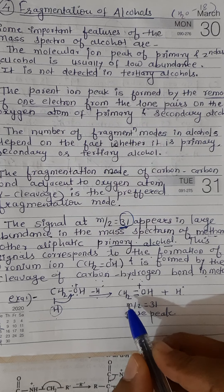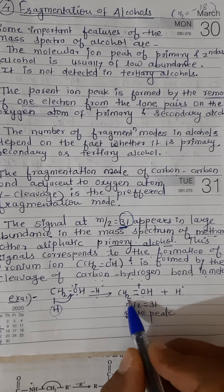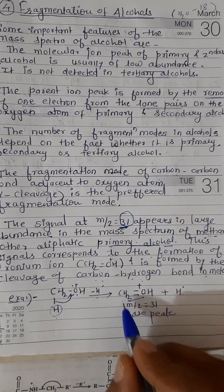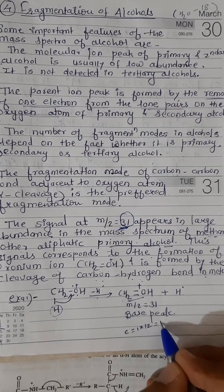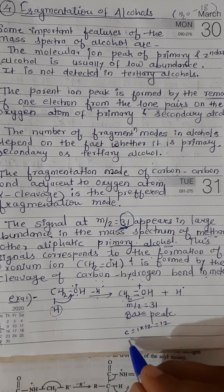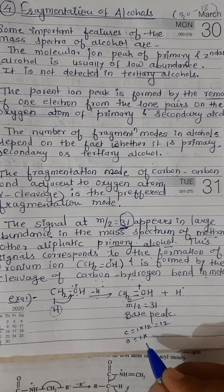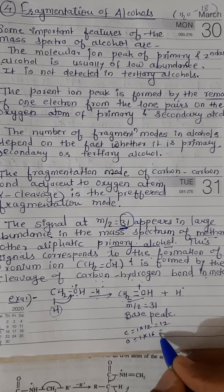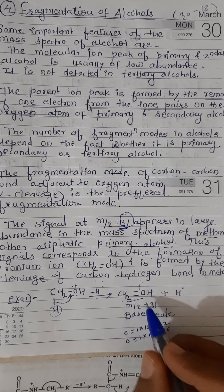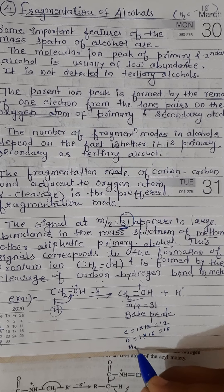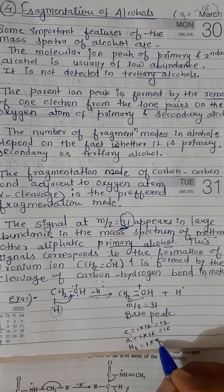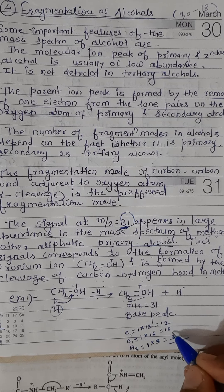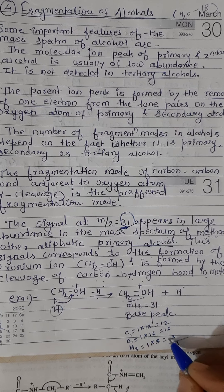Now we calculate the m/z value of CH2OH⁺: 1 carbon atom = 1 × 12 = 12; 1 oxygen atom = 1 × 16 = 16; 3 hydrogen atoms = 1 × 3 = 3. So the total m/z value = 12 + 16 + 3 = 31.